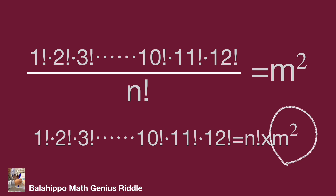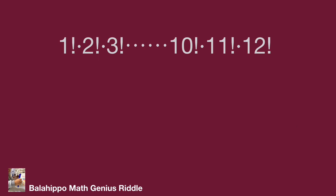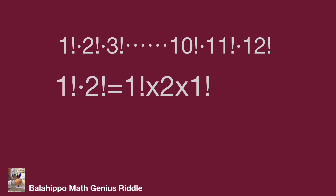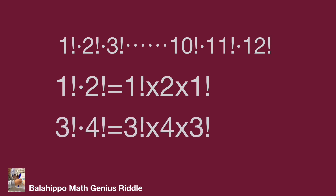We need to generate square items from the left side. Look at the first and second items: 1 factorial times 2 factorial. Since 2 factorial equals 2 times 1 factorial, we get 1 factorial times 2 times 1 factorial. Similarly, 3 factorial times 4 factorial equals 3 factorial times 4 times 3 factorial. From these two groups, 1 factorial squared and 3 factorial squared each form a perfect square.